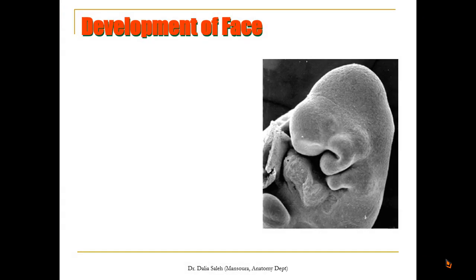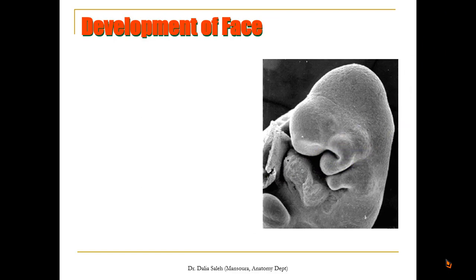To start with the development of the face, we should revise important information. This is a side view of an embryo. This bulge represents the forebrain, and this is the mesenchymal condensation in front of the forebrain. This is the first pharyngeal arch — its dorsal aspect is known as the maxillary process, and its ventral aspect is called the mandibular process. Dorsal to the maxillary process there is a bulge overlying the trigeminal ganglia. We also have the second pharyngeal arch, the first pharyngeal cleft, and the cardiac bulge where the heart will develop.